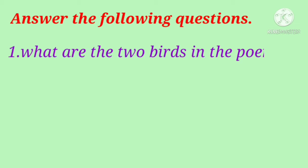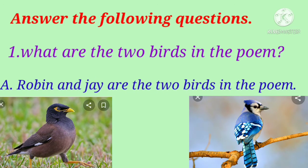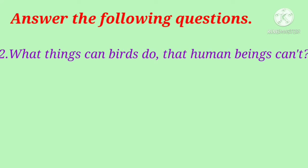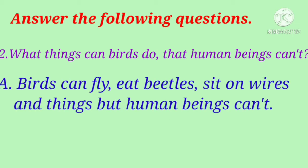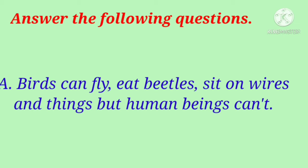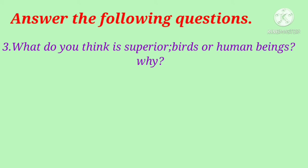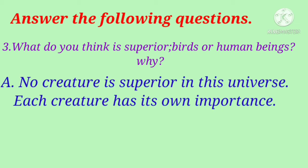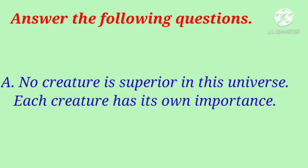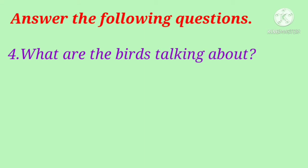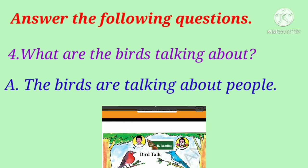Dear children, now try to answer the following questions. What are the two birds in the poem? Robin and Jay are the two birds in the poem. Second question: what things can birds do that human beings can't? Birds can fly, eat beetles, sit on wires and things, but human beings can't. Third question: what do you think is superior — birds or human beings? No creature is superior in this universe; each creature has its own importance.